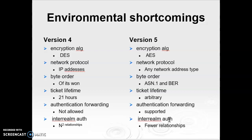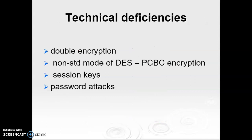Now for technical deficiencies. The first is double encryption: version 4 requires the client to encrypt the ticket twice — once with the secret key of the target server and again with the secret key known to the client. This second encryption is unnecessary and wasteful. Kerberos version 5 does not use double encryption.